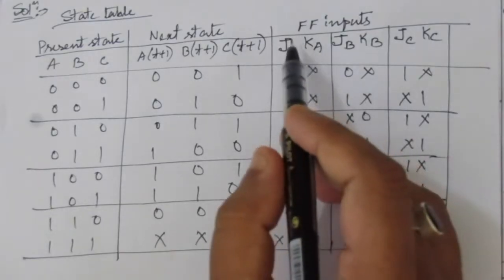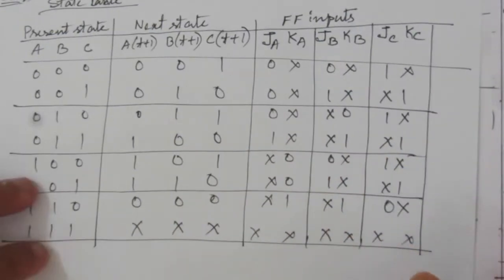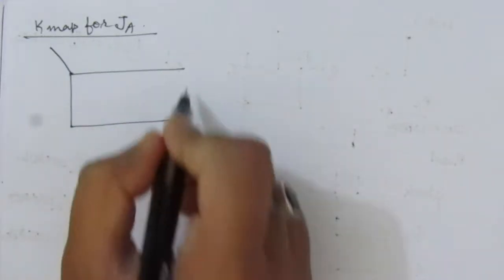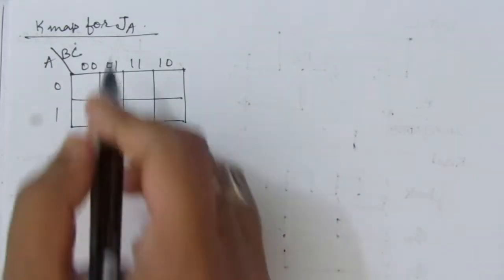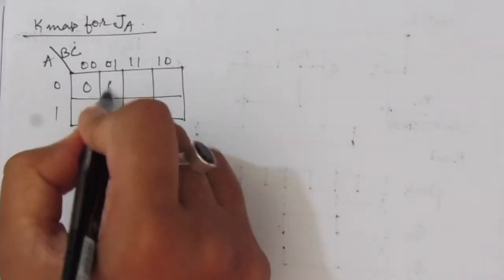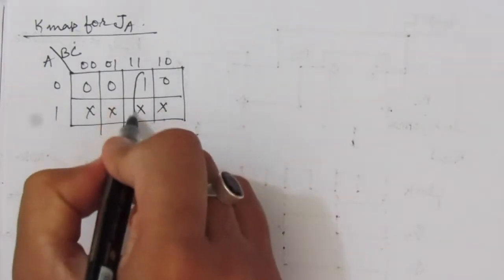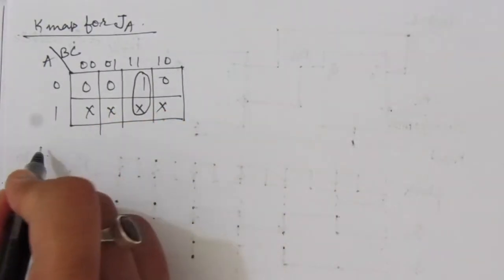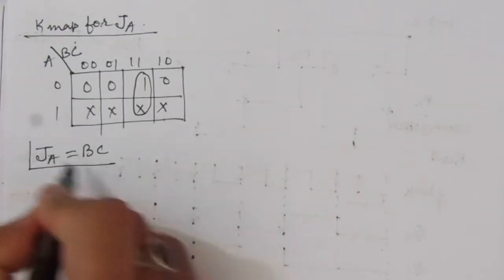Now we find the expressions for JA, KA, JB, KB, JC, and KC using K-maps. We use a three-variable map. Filling in the K-map for JA with values 0, 0, 0, 1, don't care, don't care, don't care, don't care, we can combine to get one term. Therefore, JA = BC.